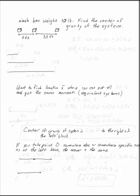Each box weighs 10 pounds. Find the center of gravity of the system. These are discrete weights, so I have a 10 pound weight here, another 10 pound weight in the middle, and a 10 pound weight at the end.